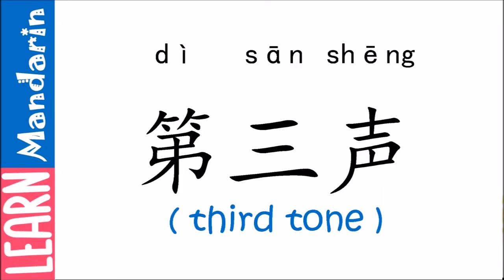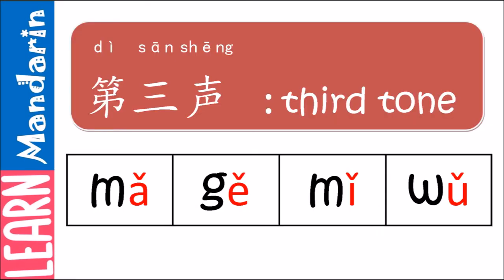第三声 — the third tone looks like a small alphabet letter V. The tone drops and rises. You need to pronounce this tone clearly and distinctively by reading it in a slower manner. Let's try it out.